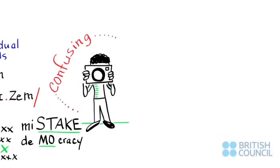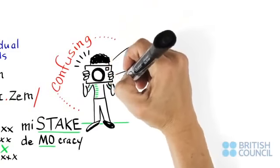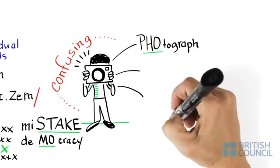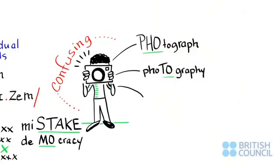Word stress can be confusing when it changes with different parts of a word family. For instance, photograph, photography, photographic.